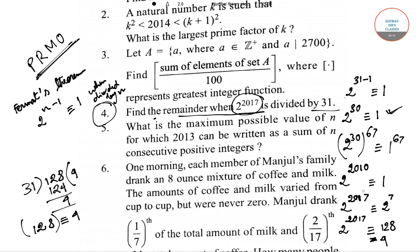Moving from 2 to the power 2010 to 2 to the power 2017, we get the remainder as 2 to the power 7, which is 128 — greater than 31. So we divided 128 again by 31 and got a remainder of 4. Therefore, 4 is the final answer: the remainder when 2 to the power 2017 is divided by 31.